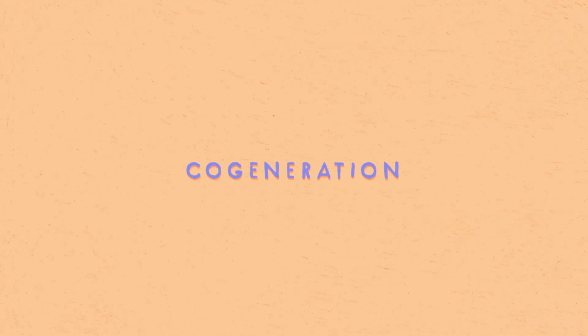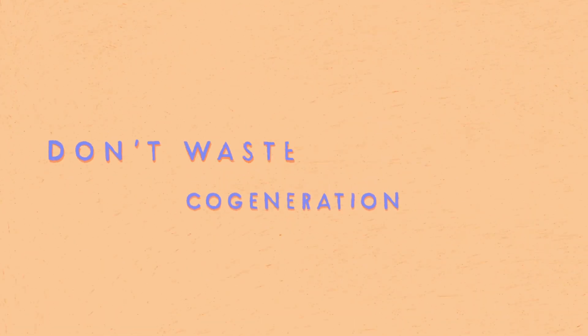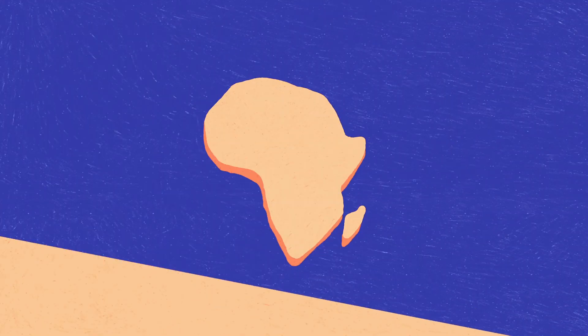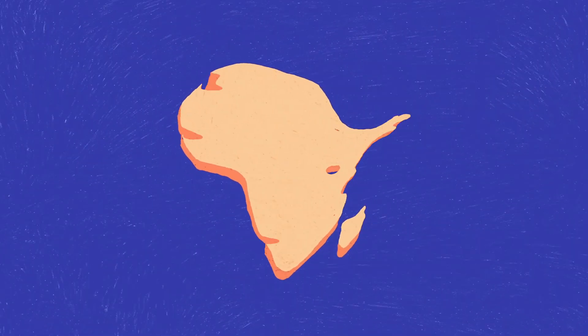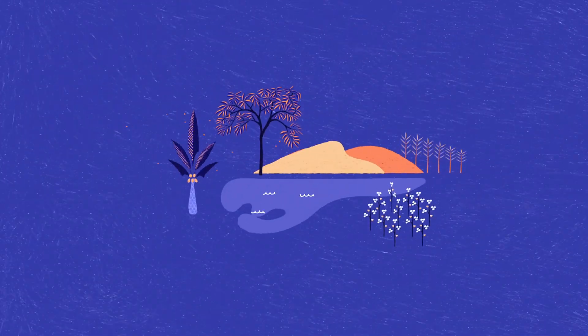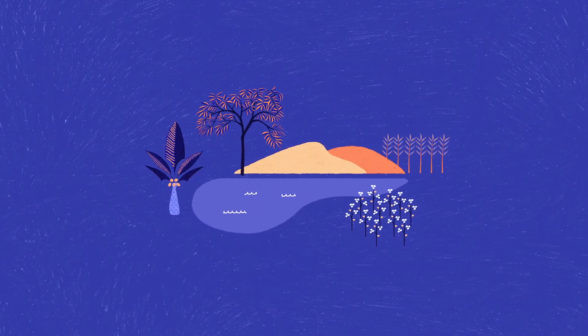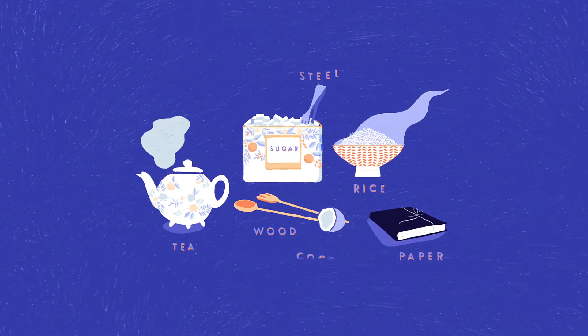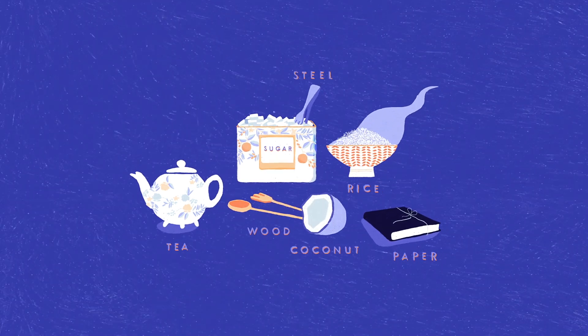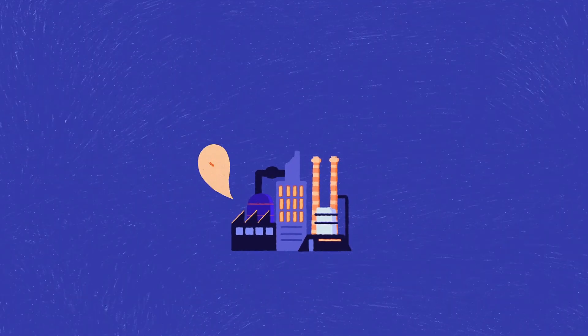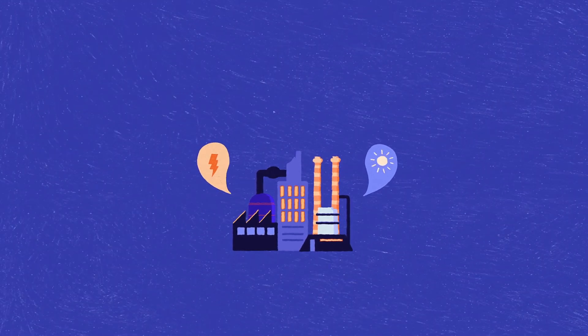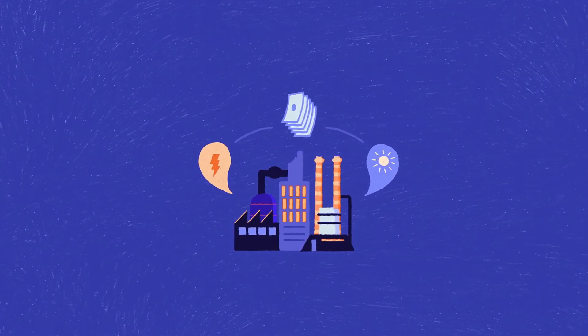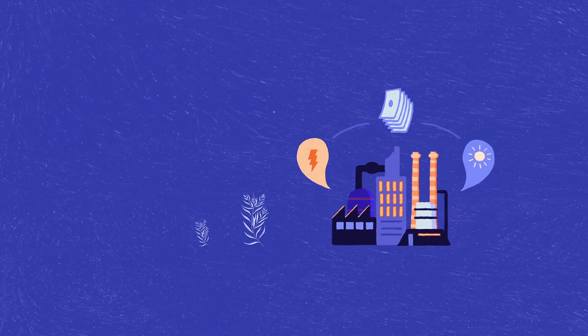Cogeneration for the next generation: don't waste that waste. The African continent is growing fast. We have many natural resources which our industries use to produce things like sugar, rice, wood, tea, paper, and many other goods. But all these industries need both electricity and heat for their production, and these are very expensive.